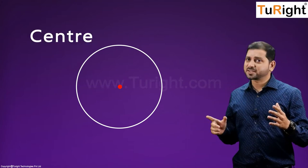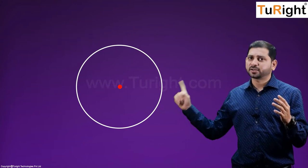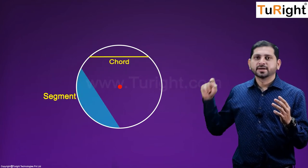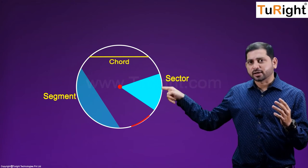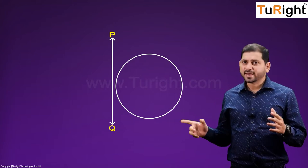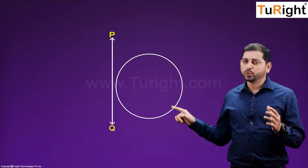We have also studied various terms related to circles such as chord, segment, sector, and arc. Let us now examine different situations when a circle and a line are given in a plane. Let us consider a circle and a line PQ — there can be three possibilities.